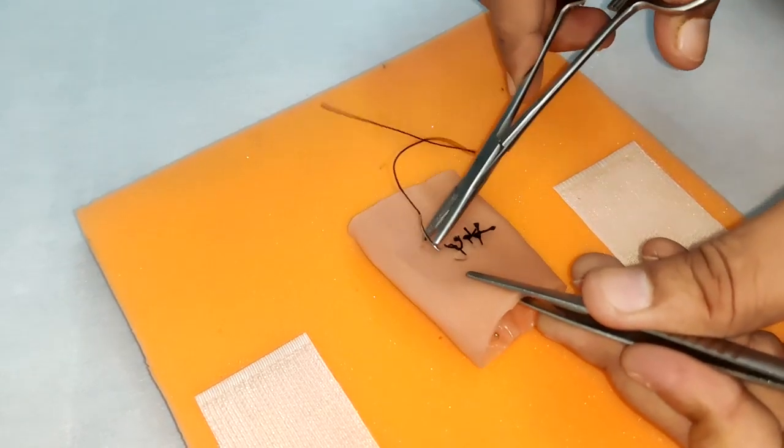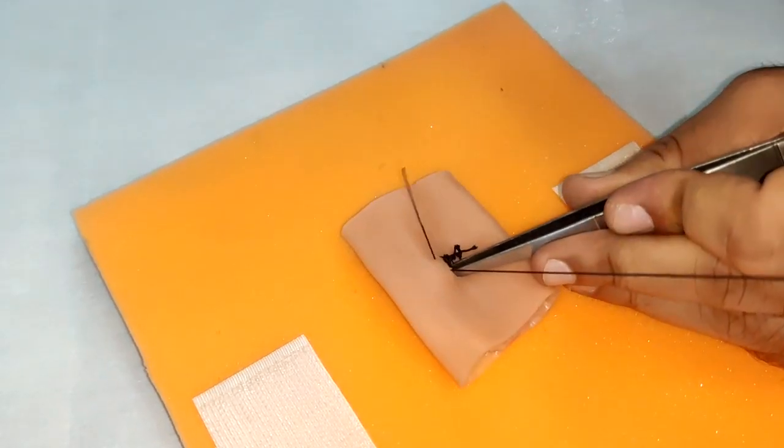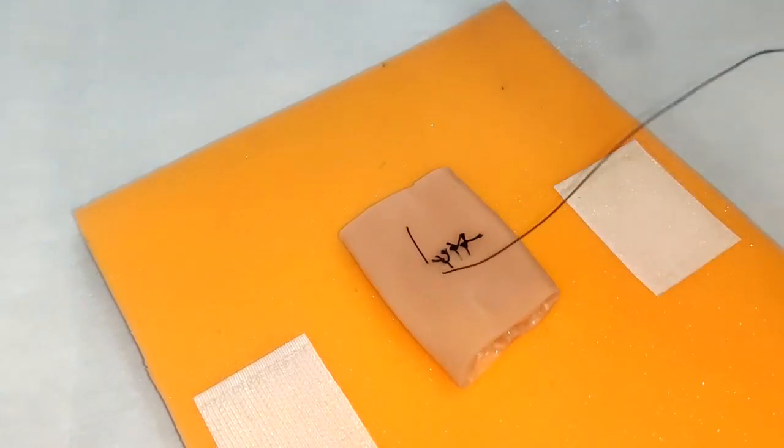Make sure while we are taking this blind stitch, we are not taking the posterior wall of the intestine, otherwise we will cause obstruction of the lumen.